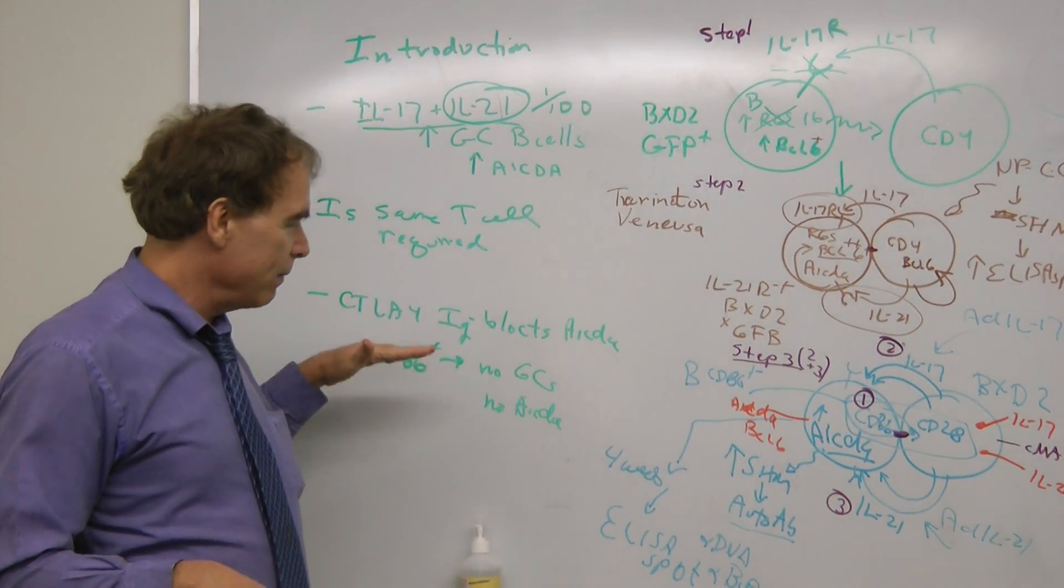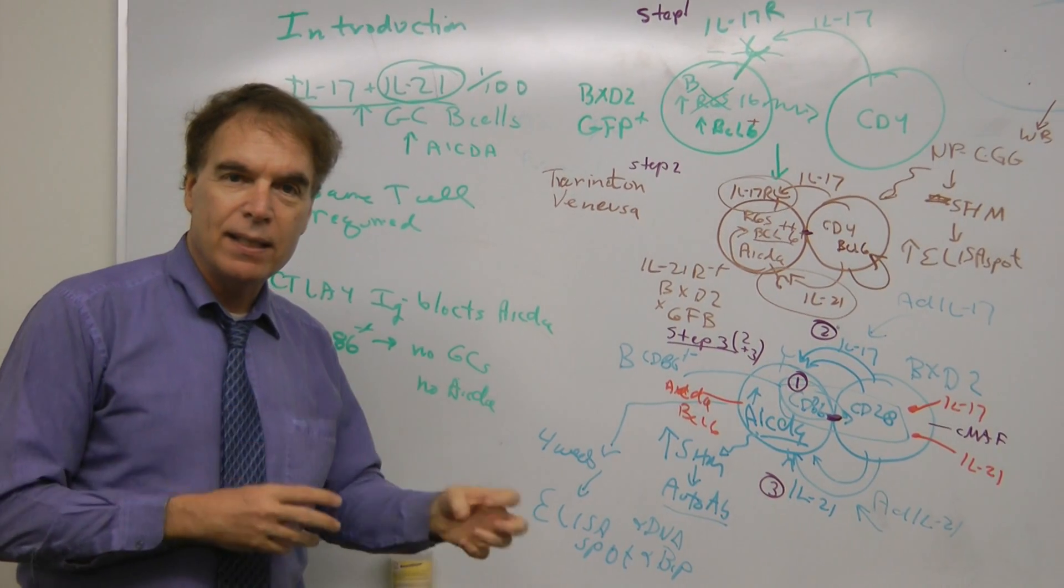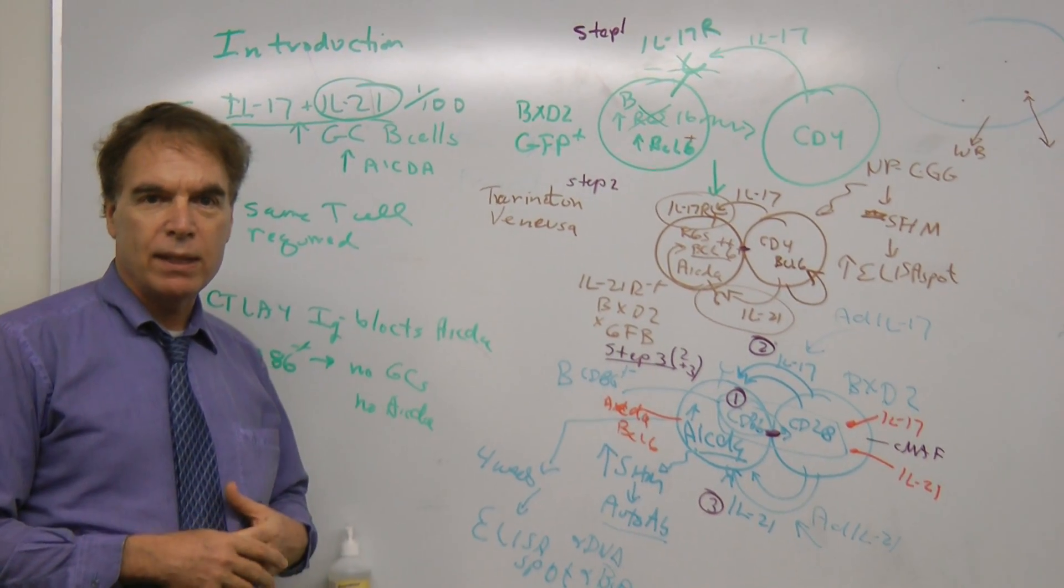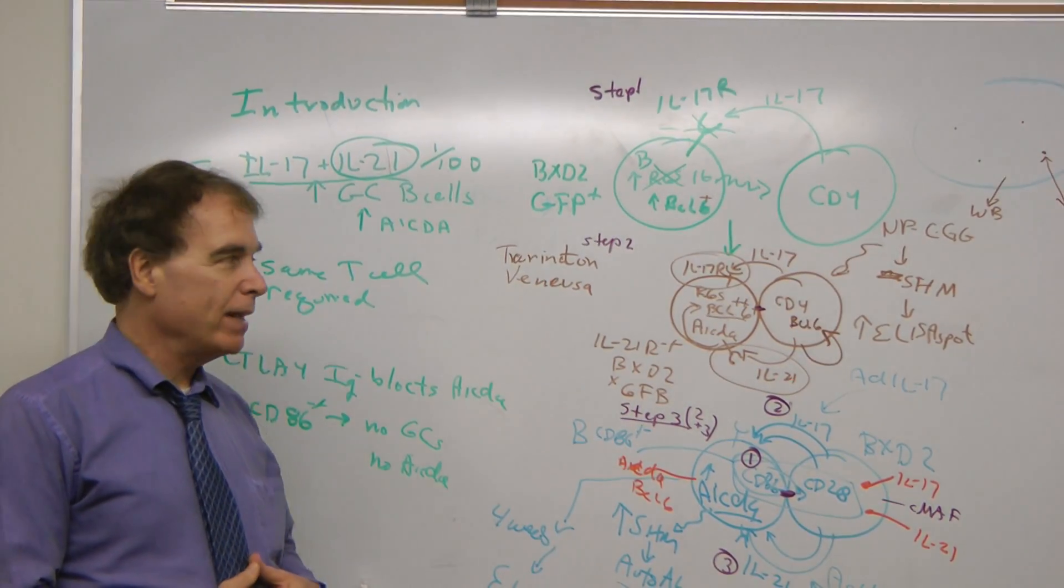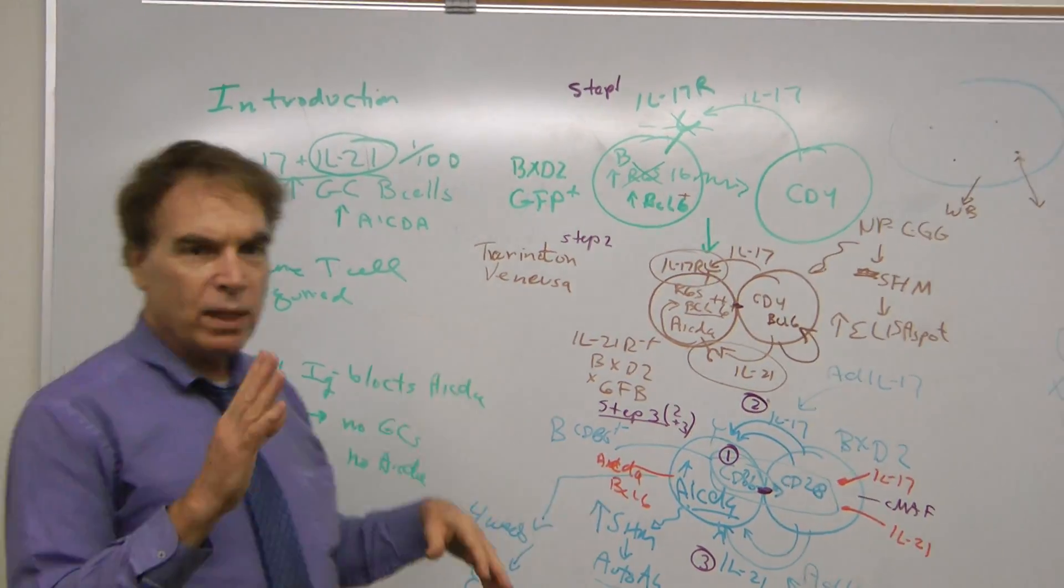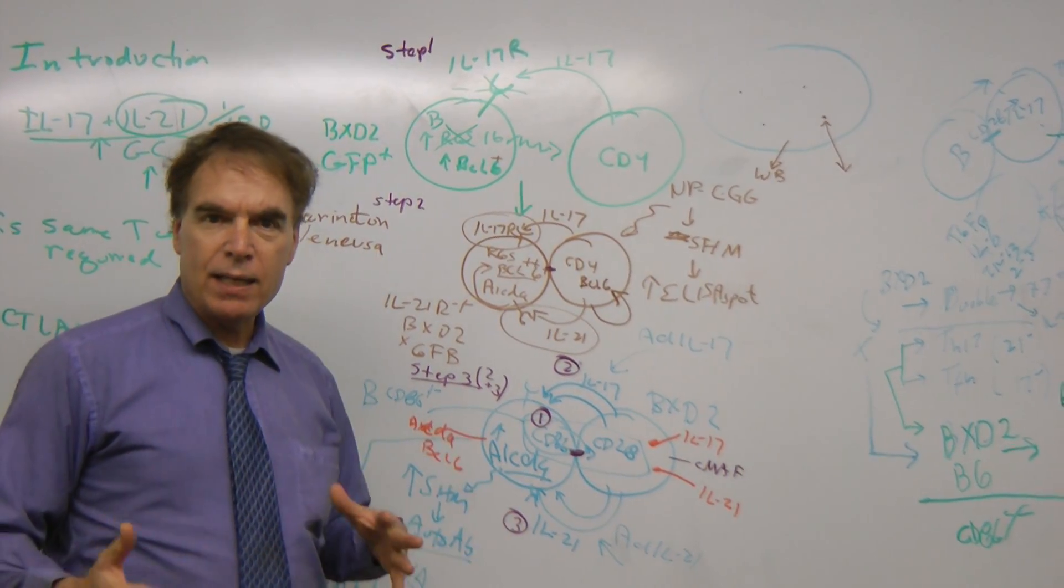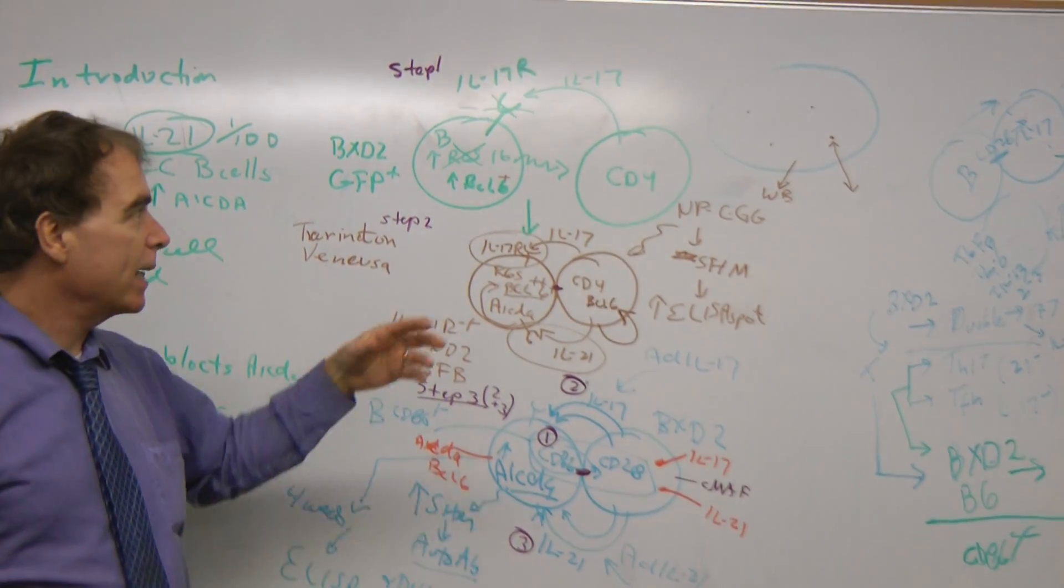The other thing I want to say that we think is important is the necessity of CD28-CD86 interactions, because a long time ago we showed that blocking that can block upregulation of AID and prevent germinal center formation. So there are three steps that may occur. These may be simultaneous or one may occur before the other, but let me talk about the three mechanisms.